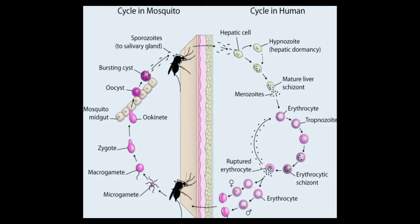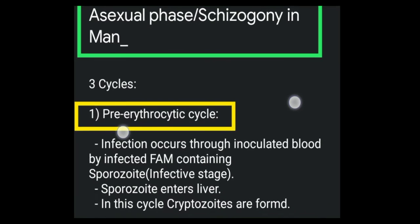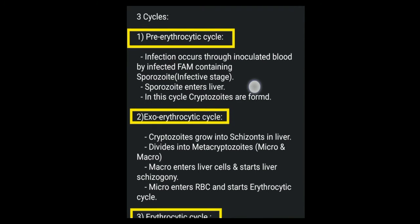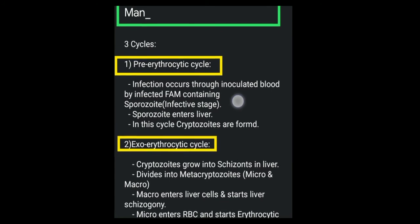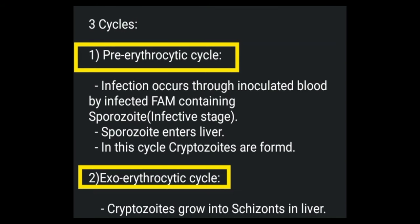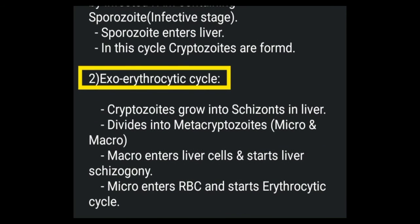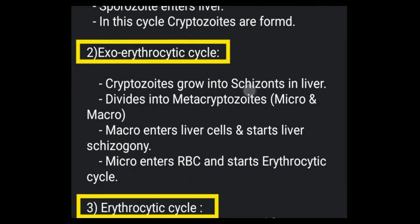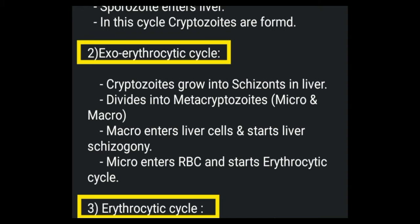In the asexual phase, schizogony, there are three cycles: pre-erythrocytic, exo-erythrocytic, and erythrocytic. In the pre-erythrocytic cycle, infection occurs through inoculated blood from an infected female containing sporozoites — the infective stage for humans. Sporozoites enter the liver and cryptozoites are formed. In the exo-erythrocytic cycle, cryptozoites grow into schizonts in the liver and divide into metakryptozoites — micro and macro — and the macro metakryptozoites re-enter liver cells to restart liver schizogony.